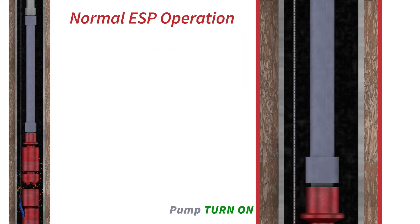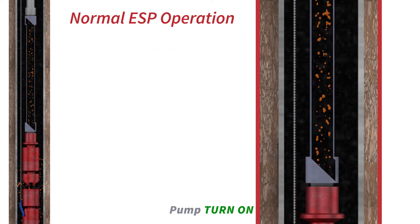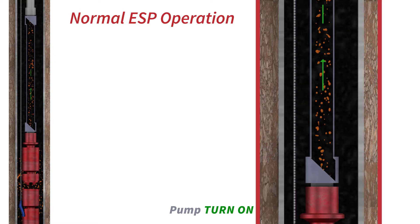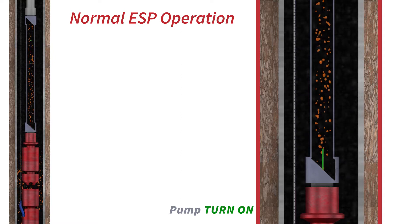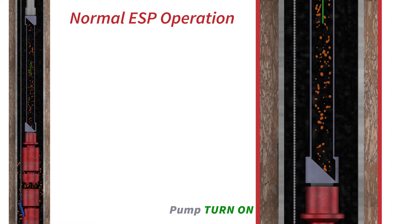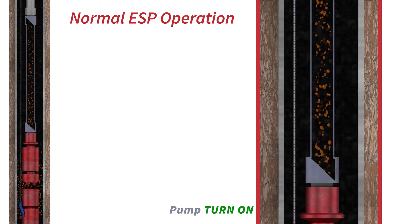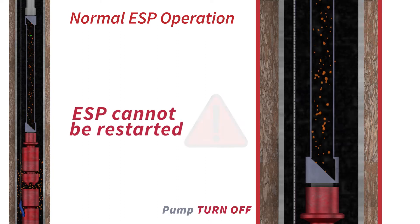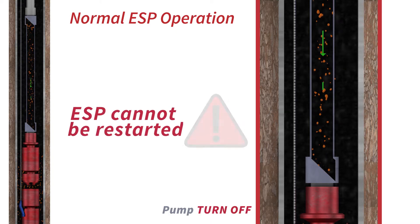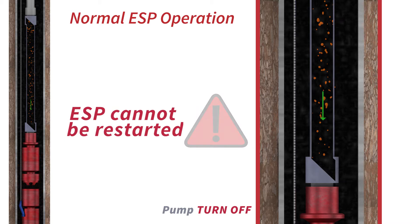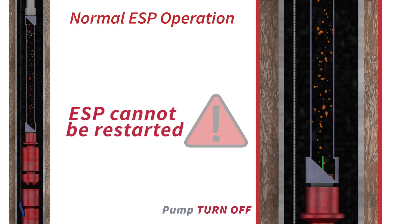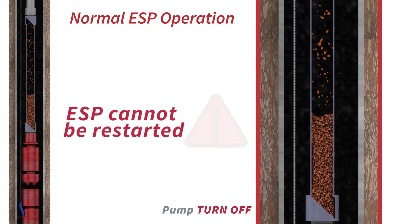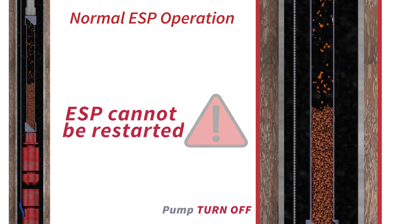One of the primary issues in artificial lift is handling solids during production. During a shutdown, sand in the production stream falls back into the pump and creates a solid plug in the pump. This can cause a failure when turned back on.